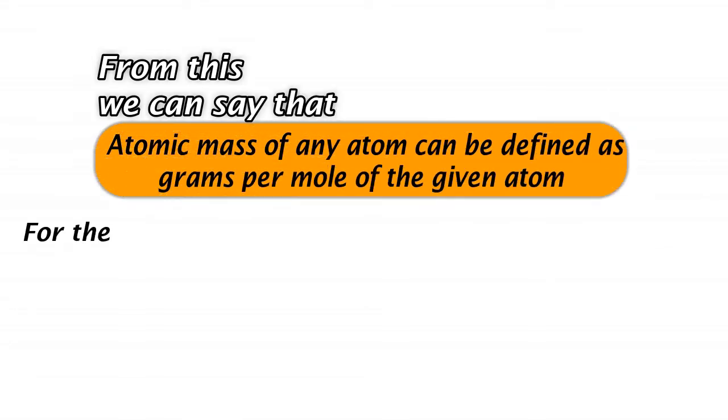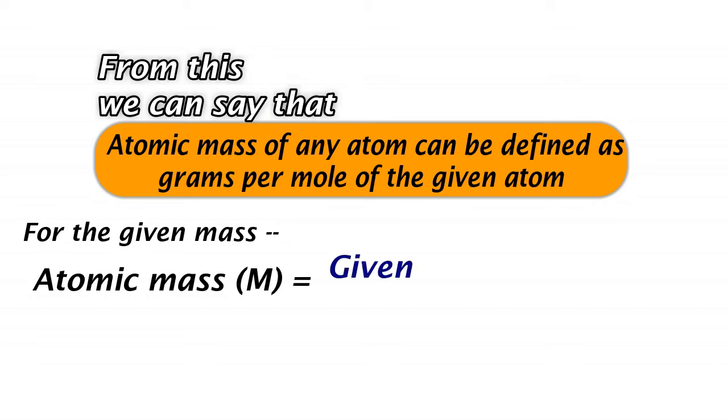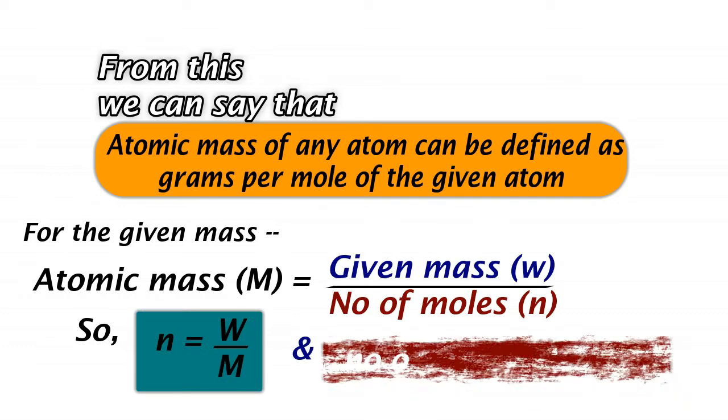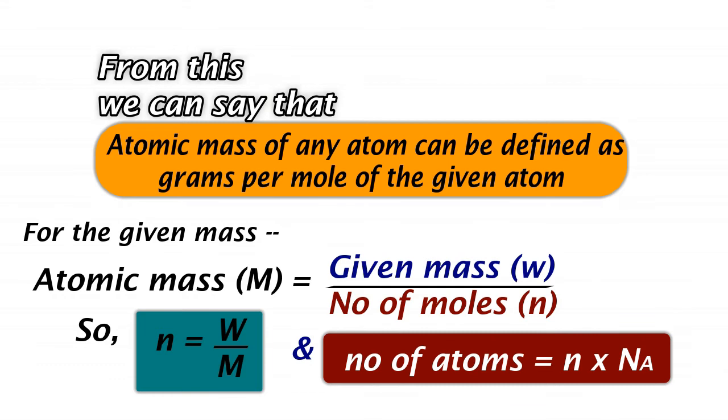From this, we can say that the atomic mass of any atom is defined as the grams per mole of the given atom. Or, the atomic mass will be equal to the given mass divided by the number of moles.